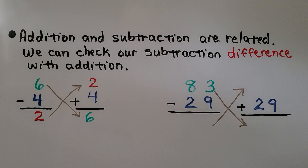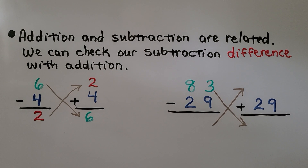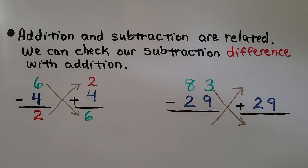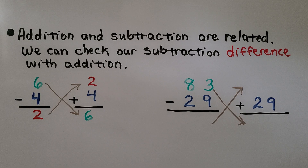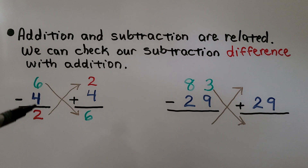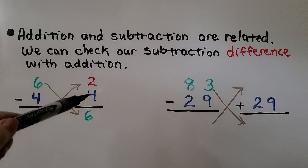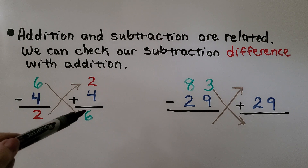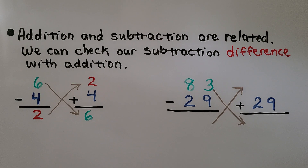Addition and subtraction are related. We can check our subtraction difference with addition. For example, six minus four is equal to two. We can add the four and the two together, and if it equals six, we know we got the right answer.